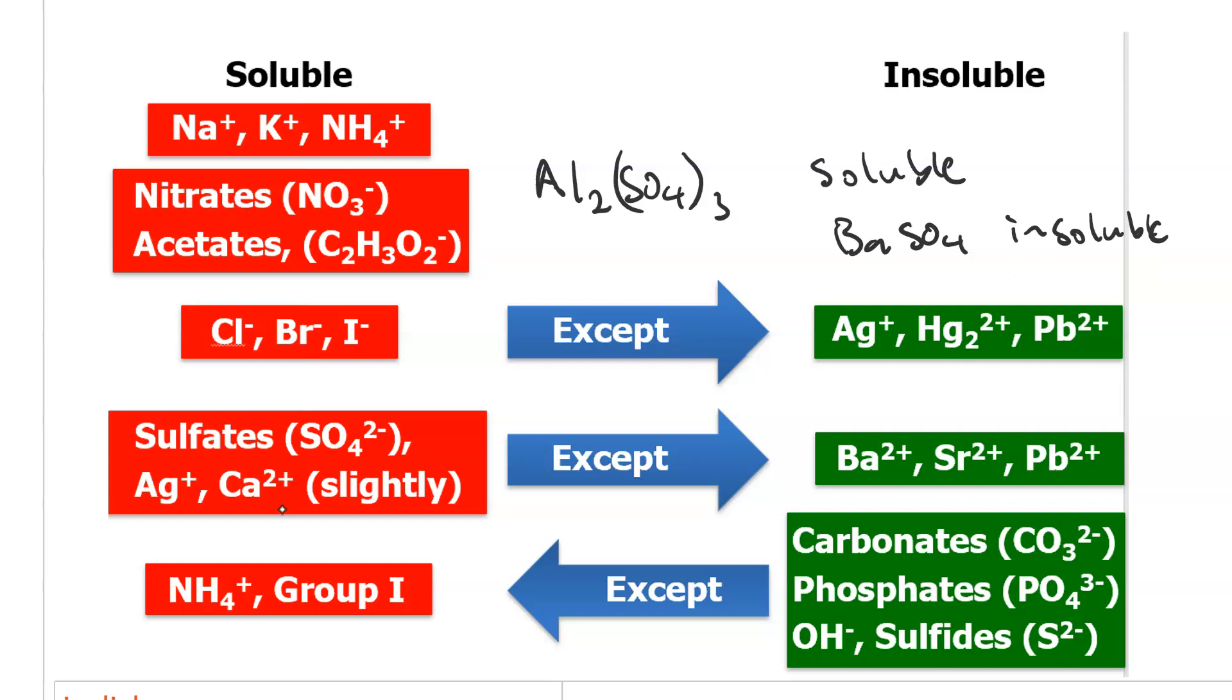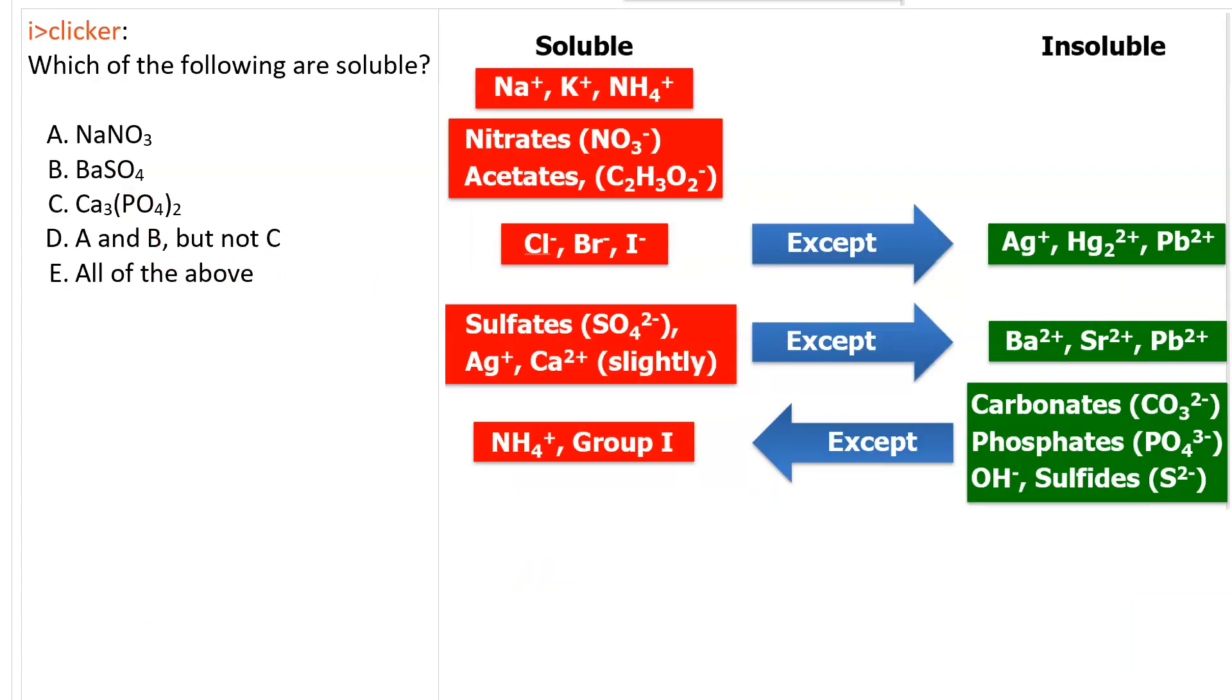So, again, it's a matter of seeing if the combination of cation and anion makes an insoluble compound. So, here's an exercise for you. Figure out which of these following compounds are soluble. Pause the video and work it out for yourself. Then, unpause it when you've put an I for insoluble or an S for soluble next to each one.